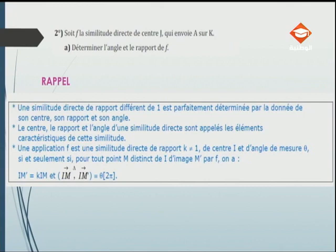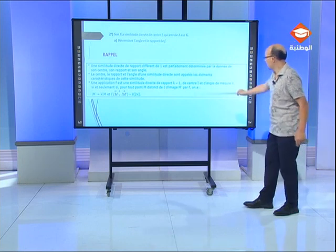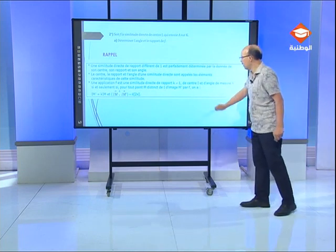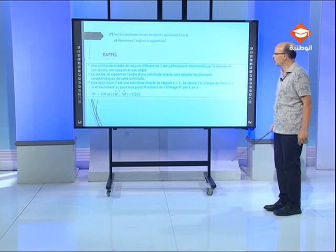Une application F est une similitude directe de rapport différent de 1, de centre I et d'angle θ, si et seulement si, pour tout M distinct de I d'image M' par F, on a IM' = k·IM, c'est-à-dire k = IM'/IM, et la mesure de l'angle orienté (IM, IM') = θ modulo 2π. Les trois éléments caractéristiques sont le centre I, le rapport k et l'angle θ.